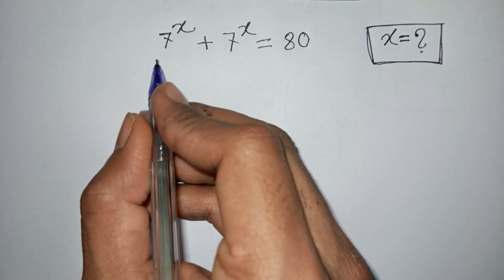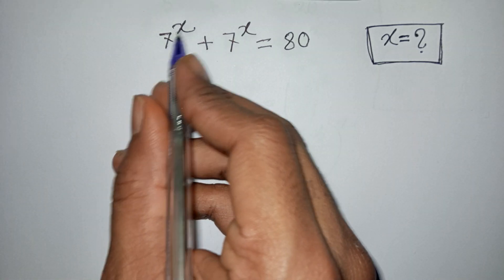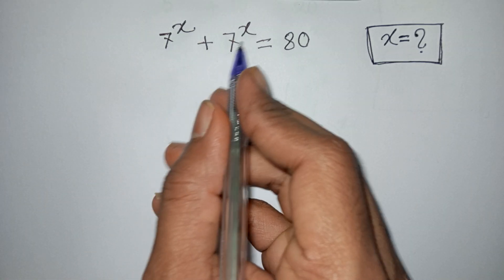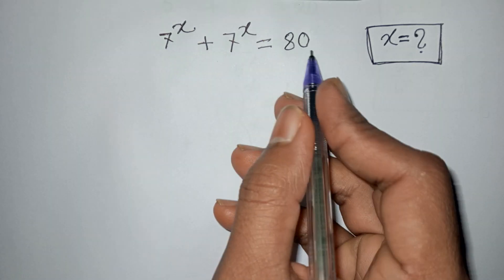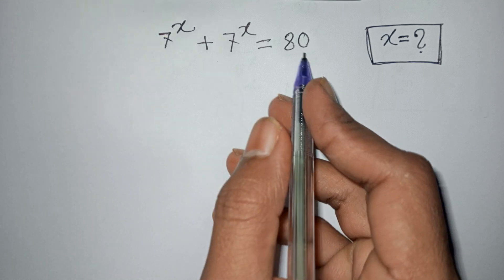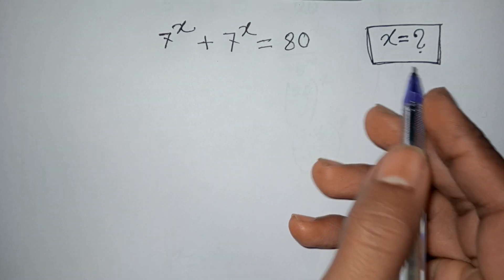How to solve 7 to the power x plus 7 to the power x is equal to 80? Find the value of x.